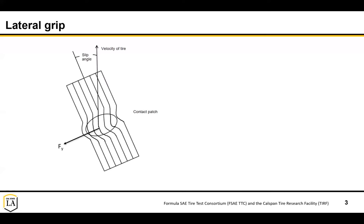How do we start to generate some of this lateral grip? Let's pretend we're looking at a tire that's rolling from beneath through a glass floor. This tire is pointing in one direction along its unaltered tread, but the tire is actually being moved in another direction along this velocity vector. The tire is allowed to roll and spin around its axis. As it's spinning and being pulled sideways, the tire tread is coming down into the contact patch and getting pulled more and more into the direction of the tire's velocity.